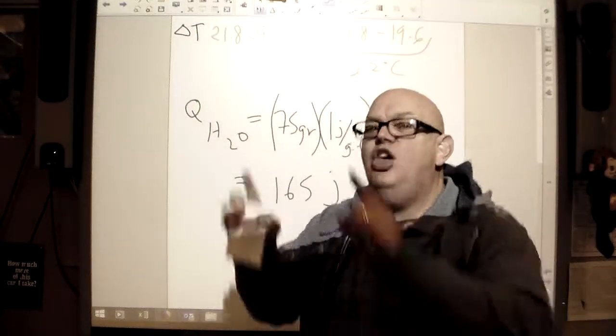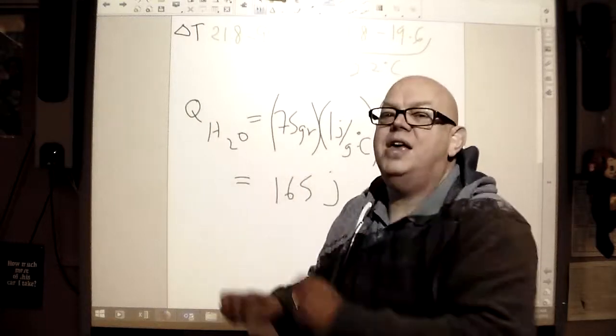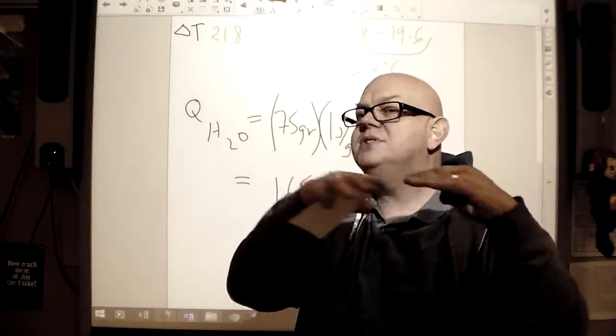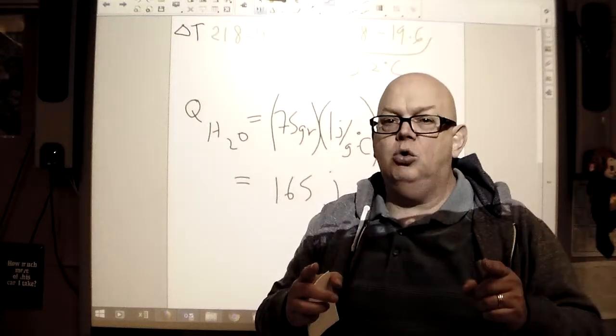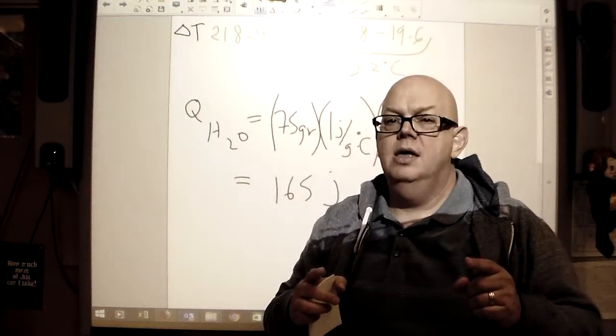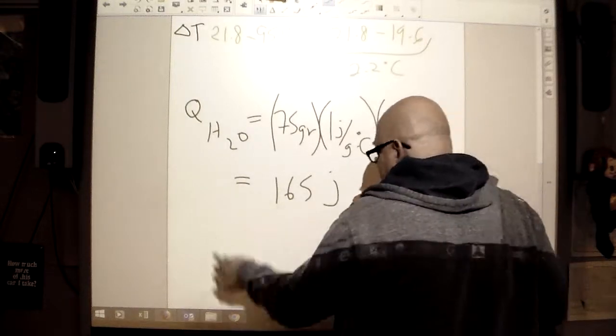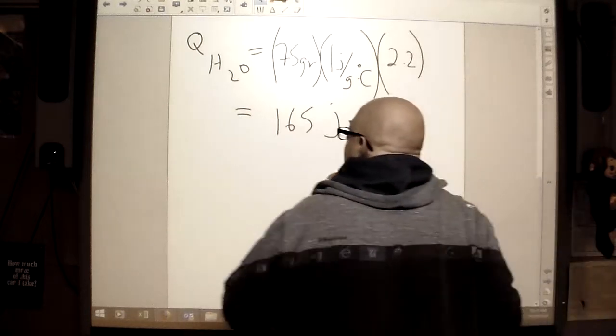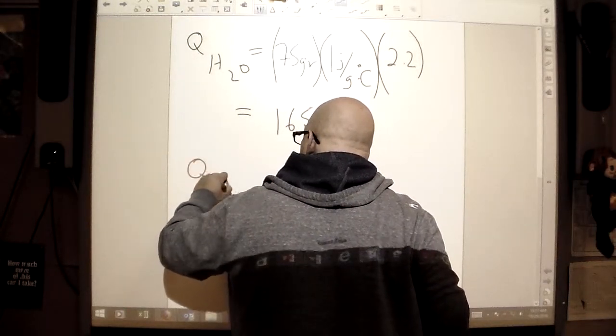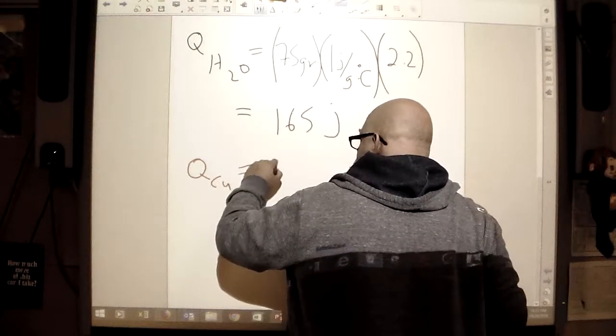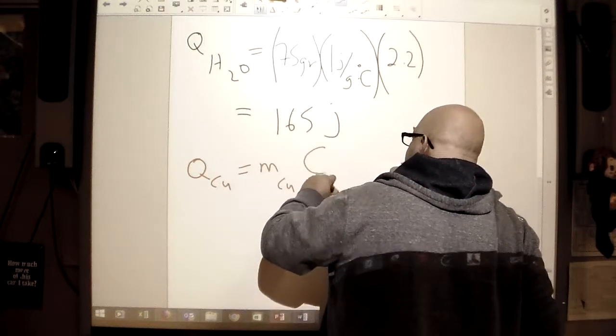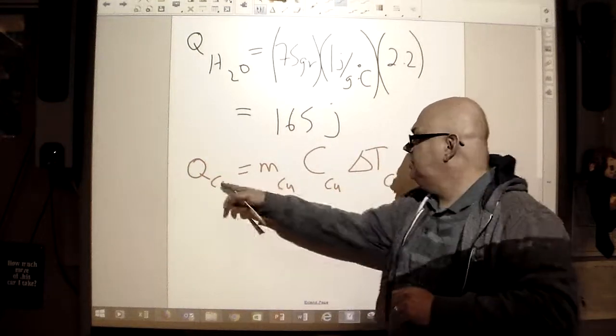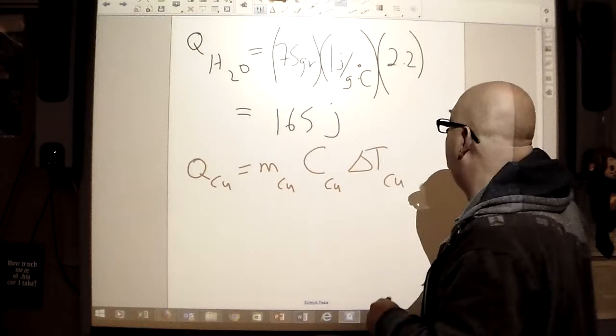Now, that also means that the Q of our copper also has to be 165 because remember, when the heat stops exchanging between the two items, it's now at an equilibrium. So, when it's at an equilibrium, then both sides have it. So, now, we can go ahead and look at the Q of our copper which is equal to the mass of our copper times the specific heat of our copper times the delta T of our copper. Notice I put the Cu there so that you guys are following along.